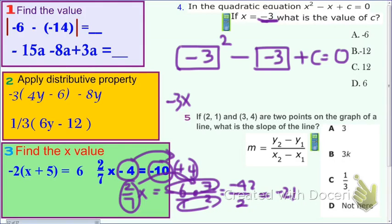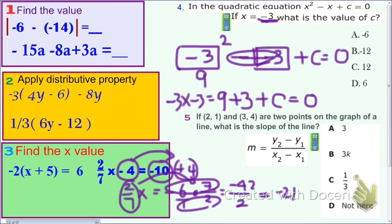So negative 3 times negative 3 equals 9. Now negative negative becomes positive, so it's plus 3. 9 plus 3 plus C equals 0. Now what is this one? 12 plus C equals 0. Now 12 plus what makes 0? Negative 12.